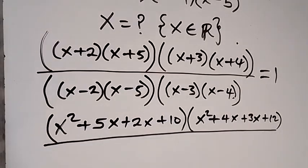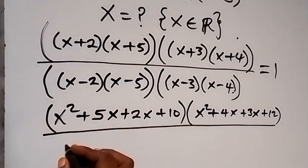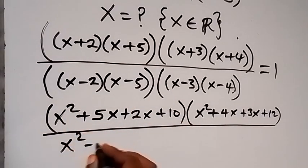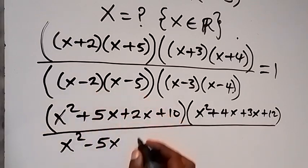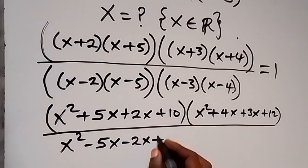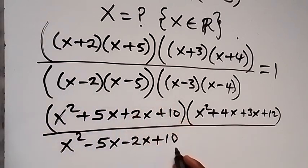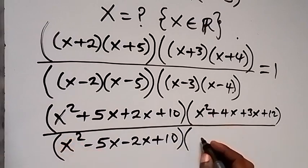In the denominator, expanding (x−2)(x−5): x², minus 5x, minus 2x, plus 10. And for (x−3)(x−4): x squared, minus 4x, minus 3x, plus 12.